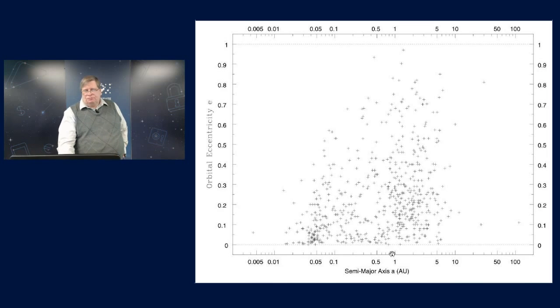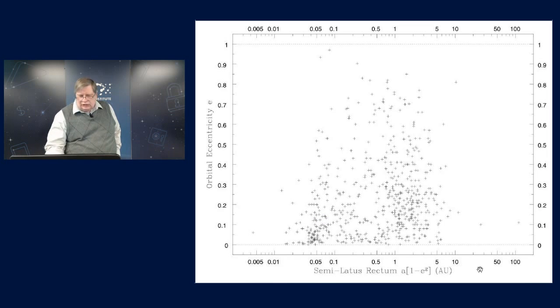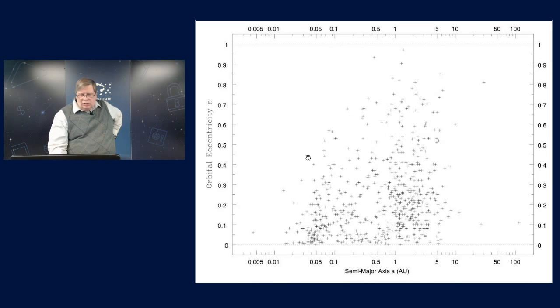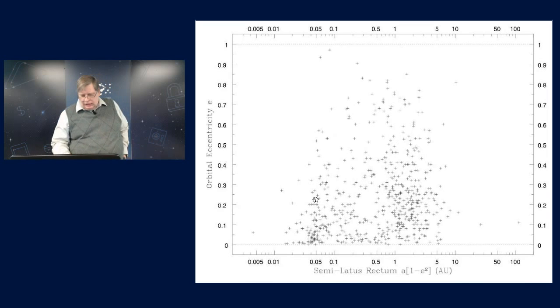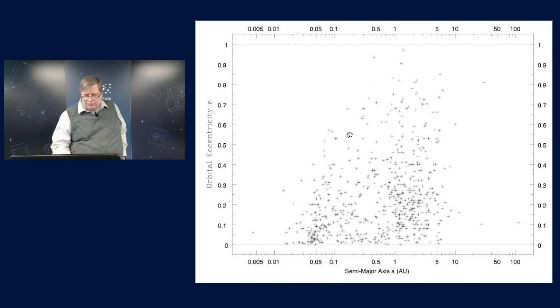While the semi-major axis is going from less than one hundredth of an AU up to more than 100 AU. But notice also that the eccentricity is correlated with the semi-major axis. There's a roll-off where the orbital eccentricity is lower for the smaller semi-major axes.